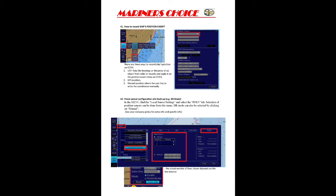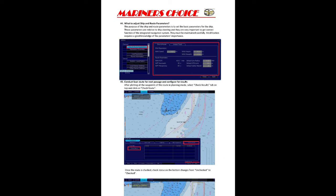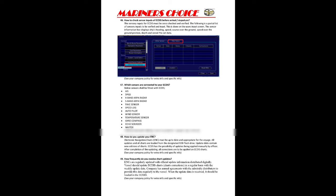How to check sensor inputs and whether all inputs are working: go to the Display menu, then Other Sensor Setting. There is a Sensor Filter Status — all headings and sensors will show as Pass, Pass, Pass, meaning the system is working. The sensors connected to your ECDIS should include AIS, GPS, X-band radar, S-band radar, time sensor, speed log, autopilot, wind sensor, and temperature sensor.